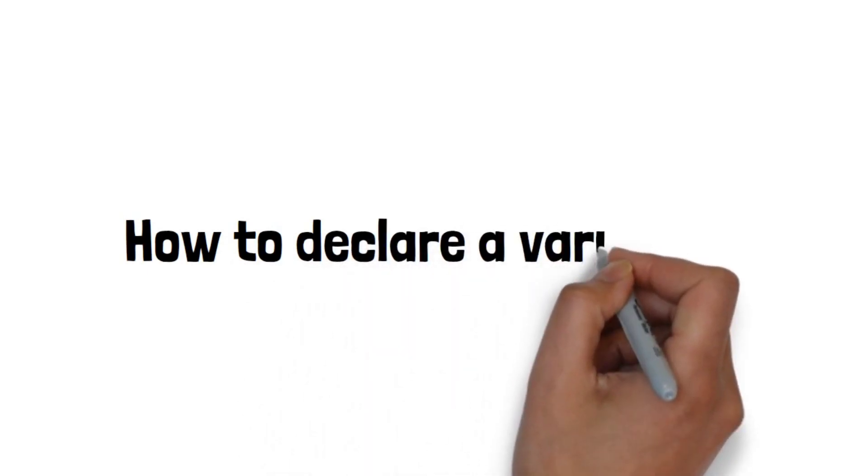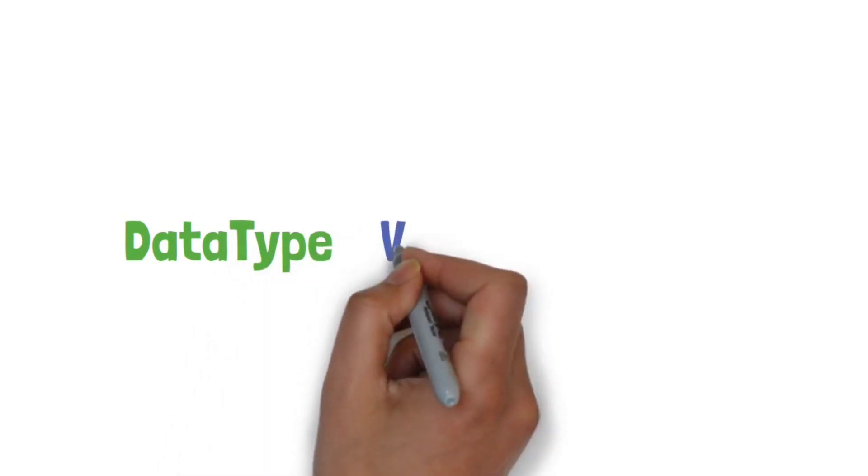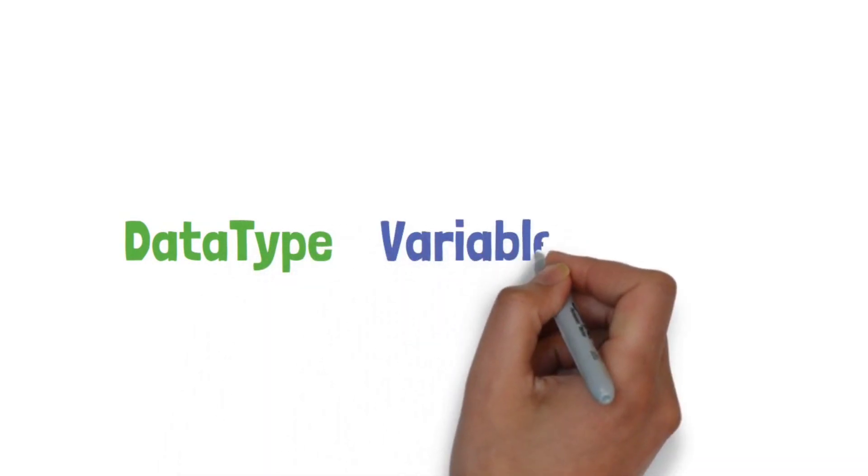How to declare a variable? We can declare variables like: data type of the variable followed by the variable name.